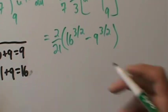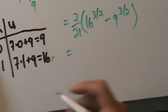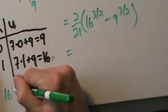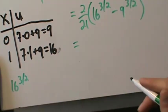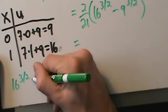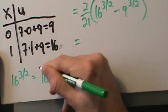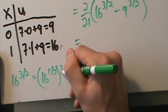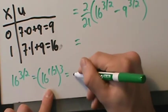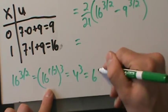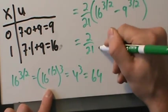16^(3/2) is the same as (16^(1/2))^3. 16^(1/2) = 4, and 4^3 = 64. So this is (2/21) × 64 minus...